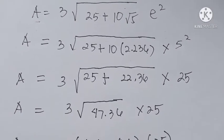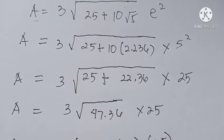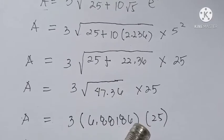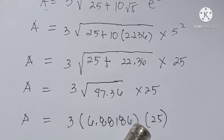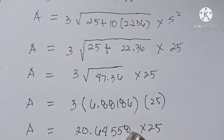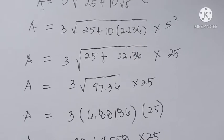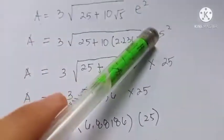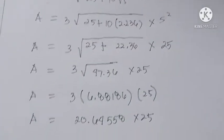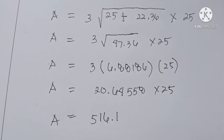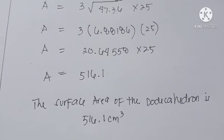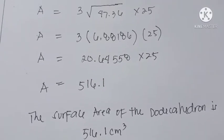36, then find its square root which is 6.88186, multiply it by 320.64458 times 2525 is the squared of pi. 5 is the length of DH. So the answer is 516.1. So the surface area of the dodecahedron is 516.1 cm squared.